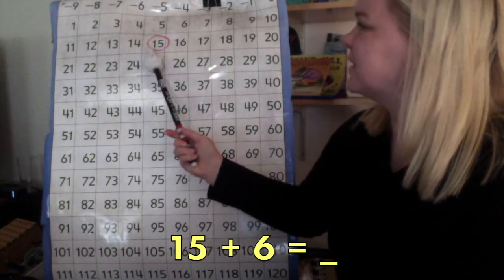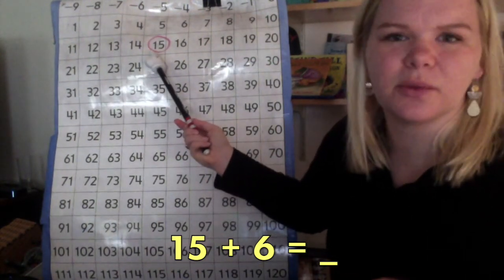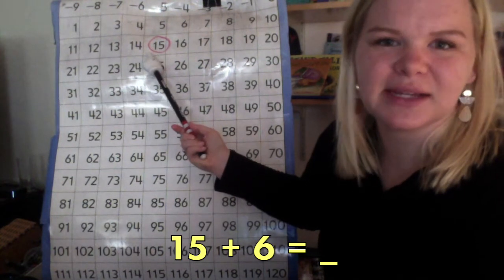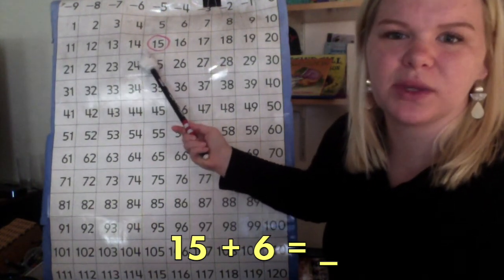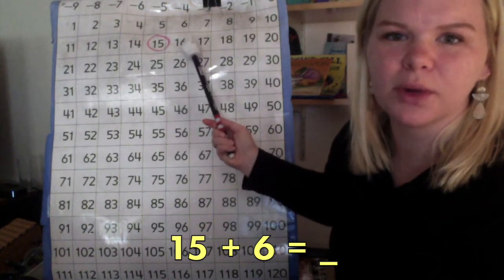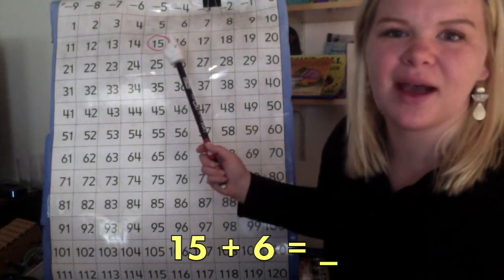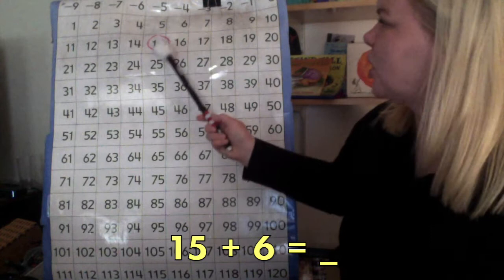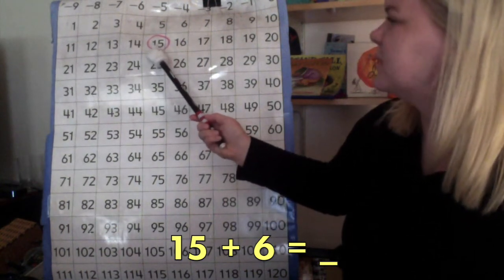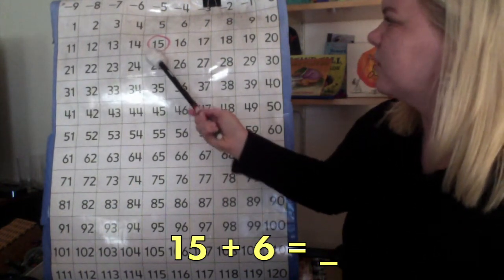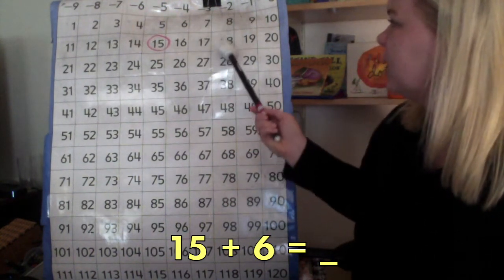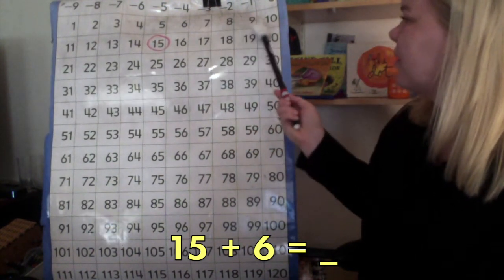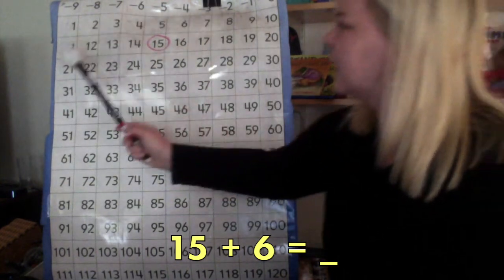So, we start at 15, and then where do we go? Well, our number sentence says 15 plus 6. So, we know we are moving forward, and we are counting up 6. Start at 15, and count up 6. 1, 2, 3, 4, 5, 6.